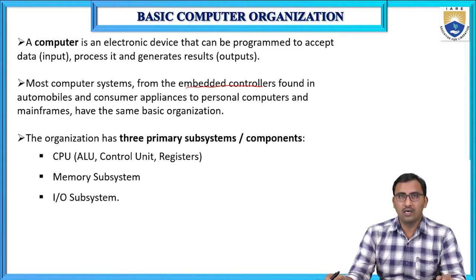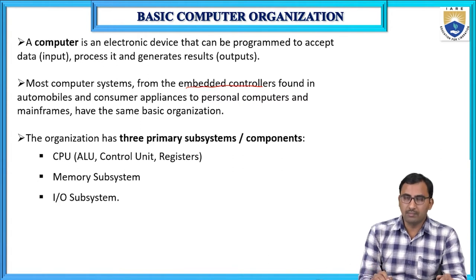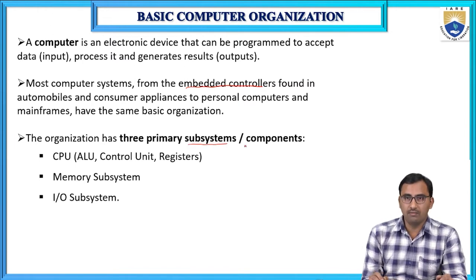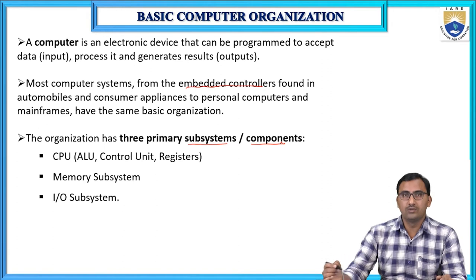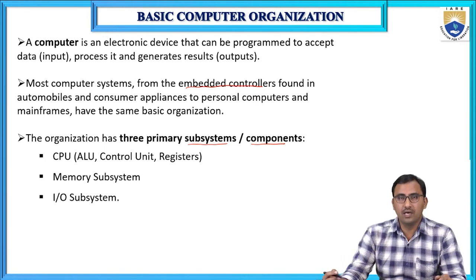The organization of any basic computer has three primary subsystems or components. The three subsystems are: the first one is CPU, central processing unit. It consists of three internal parts: ALU (arithmetic and logic unit), control unit, and registers.